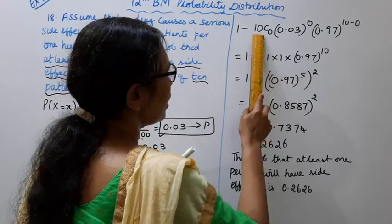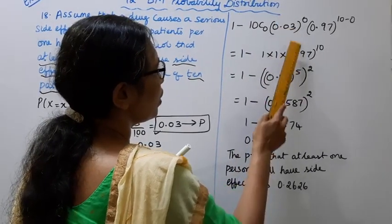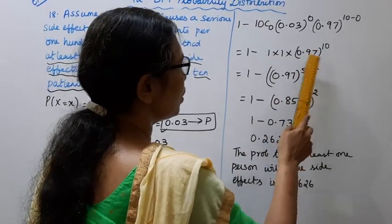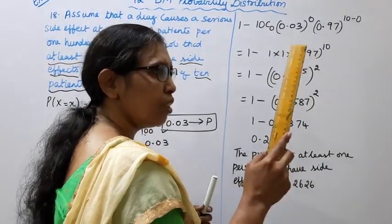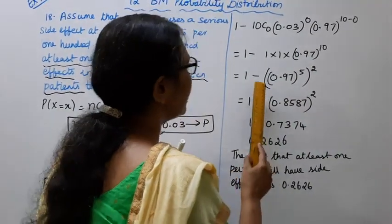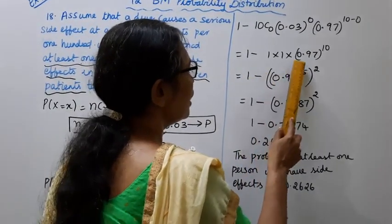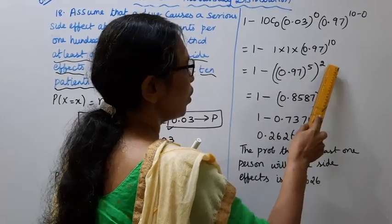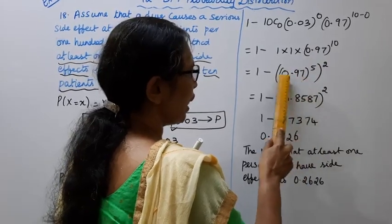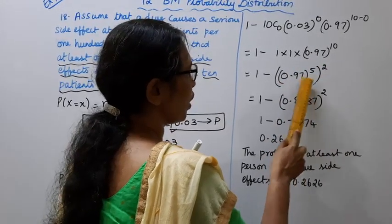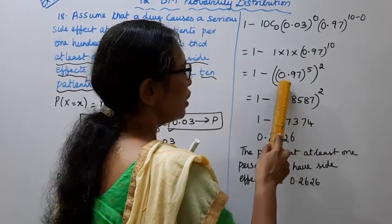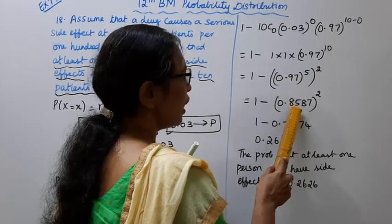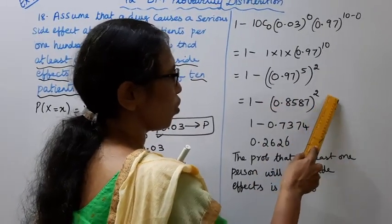1 minus, it is 10C0 is 1, 0.03 to the power 0 is 1, 0.97 to the power 10. This is 0.97 to the power 10 minus 0.97 to the power 5 the whole square. 10 and 5, 2 is 10. 0.97 to the power 5 the whole square, it is easier for you.